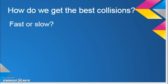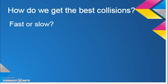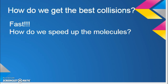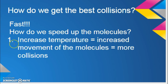So, how do we get the best collisions? If we want the best collisions, do we want our molecules moving fast or slow? Think back to a demolition derby — if you want the most excitement, you want those cars moving fast, like NASCAR. So how do we speed up molecules? One thing we could do is stir them. Another way is to increase the temperature, because temperature is the measurement of how fast the molecules are going. If we increase the temperature, we increase molecule speed, we increase the movement of molecules, and we have more collisions.